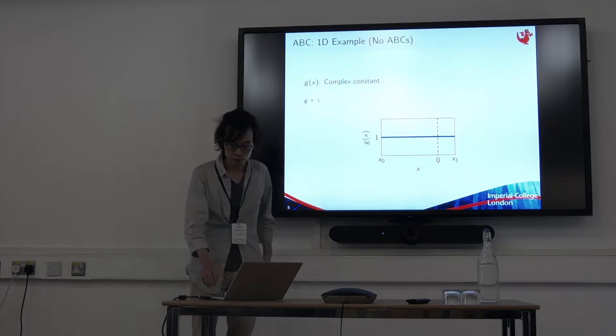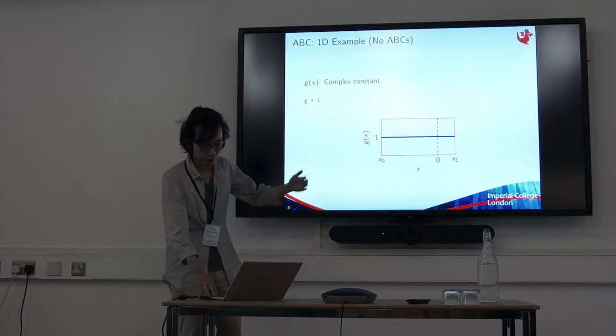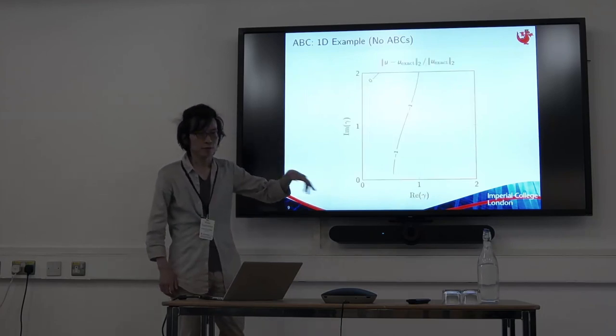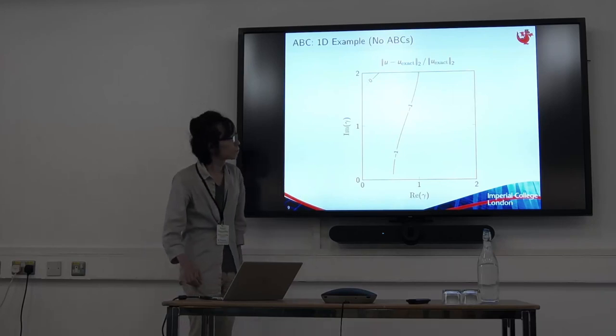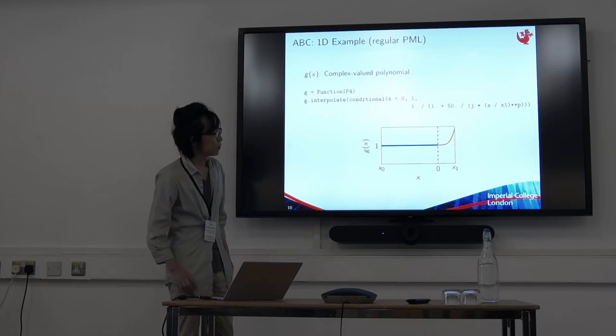Let's first try G equals to 1. So basically, we solve the Helmholtz equation everywhere with Dirichlet boundary condition. And this boundary condition produces reflection, so we have incoming waves, so the error is large.